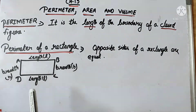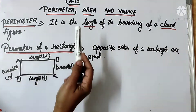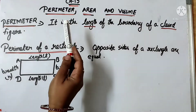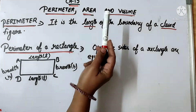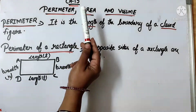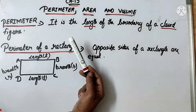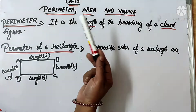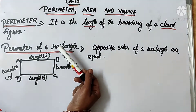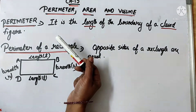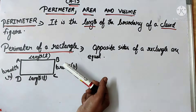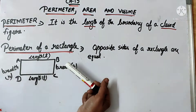Today we are going to start chapter number 15, that is Perimeter, Area and Volume. We have learnt about perimeter and area in class 4. Now we are going to learn its application of perimeter and area in real life in class 5.